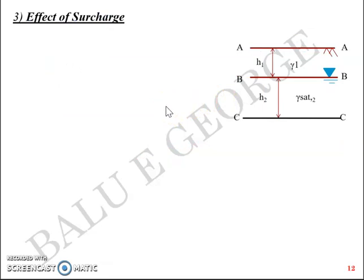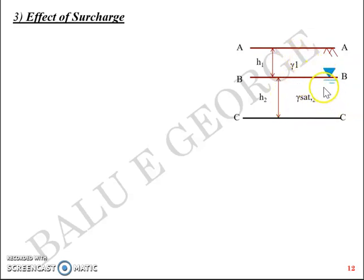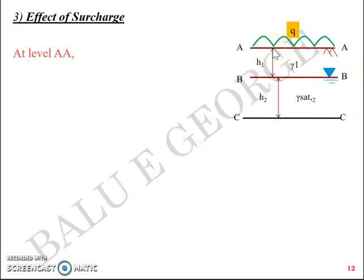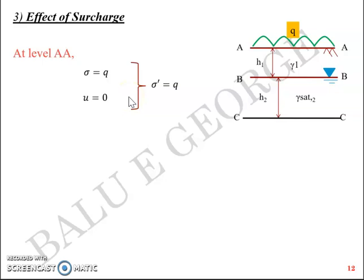Effect of surcharge. Let's take the same two-layer soil example with heights h1 and h2, with the water table at level BB. The soil above the water table has bulk unit weight gamma_1, and below the water table has saturated unit weight gamma_sat2. Assume there is a surcharge q at the surface. At level AA: total stress equals q, neutral stress equals 0 (water table is well below), so effective stress sigma dash equals q.